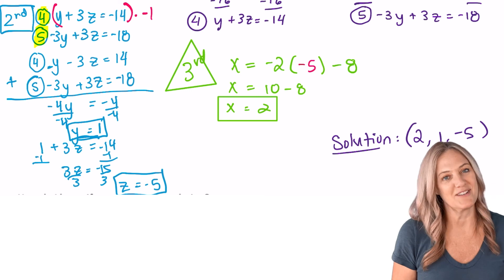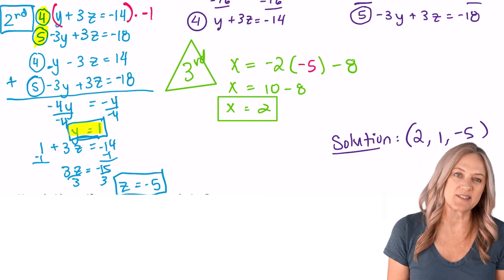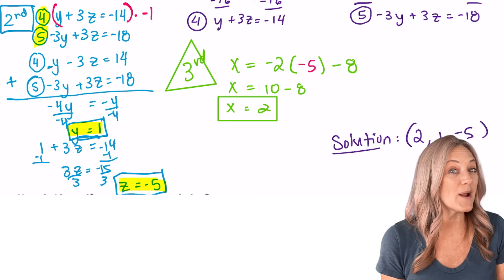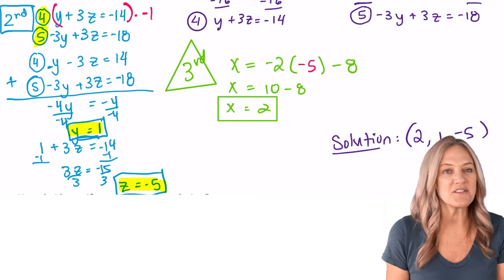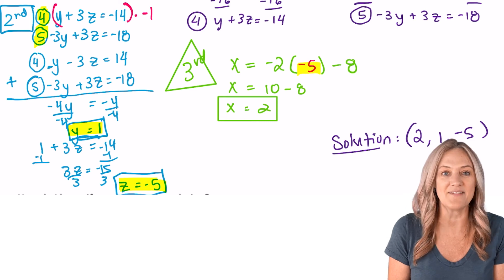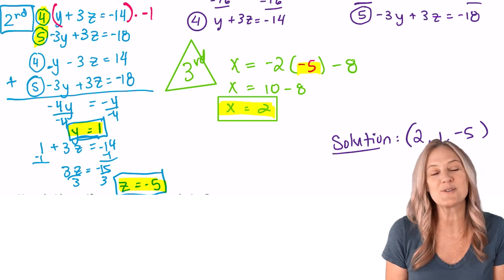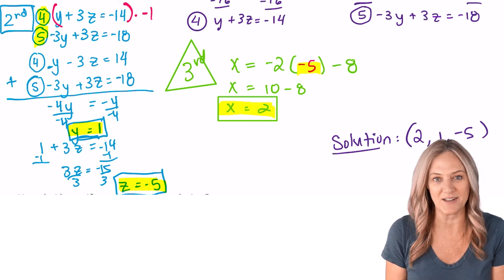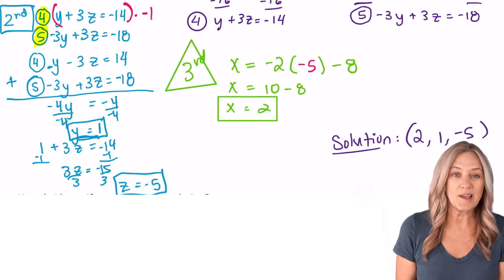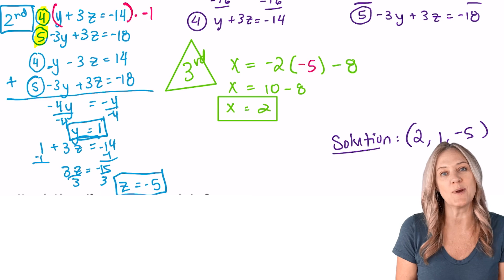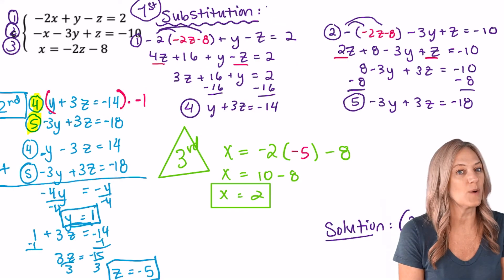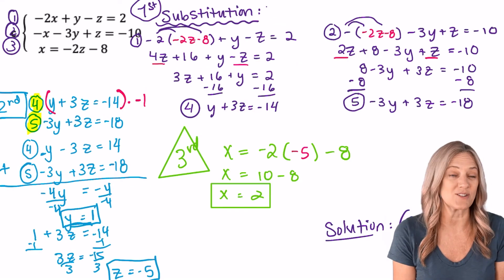Solving the two-variable system, I got y = 1 and z = -5. Then looking at equation three, x equals — all I had to do was substitute in the value for z to get x. Our ordered triple is (2, 1, -5). To check if the answer is correct, it has to be true for all three equations, so we verify in equations one and two.